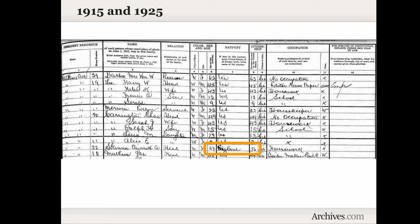There is one additional column on the 1925 census: for people who are naturalized, it's supposed to list when and where they were naturalized, which is a great clue for tracking down those naturalization records. Now let's take a look at finding these records on Archives.com.